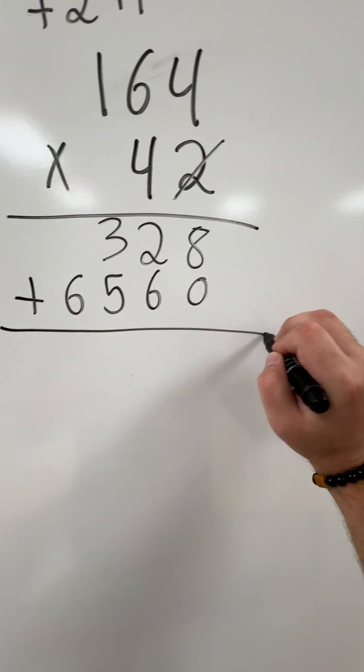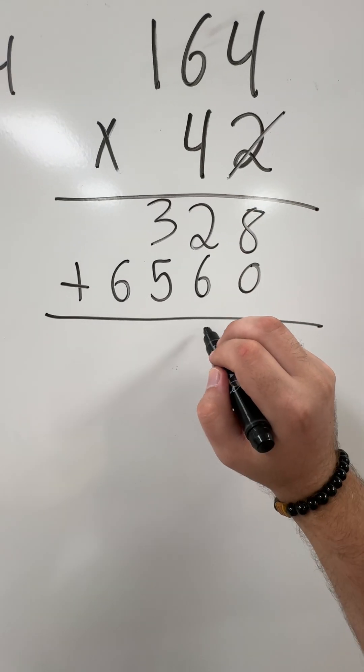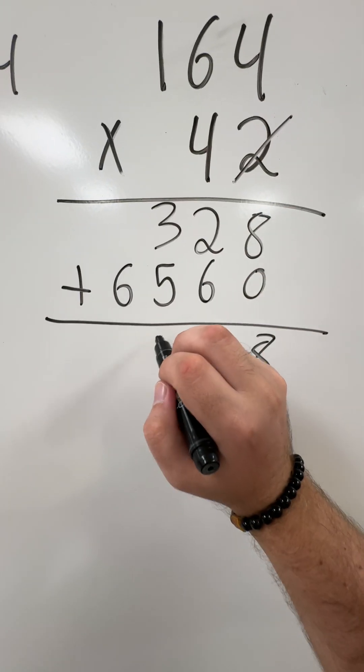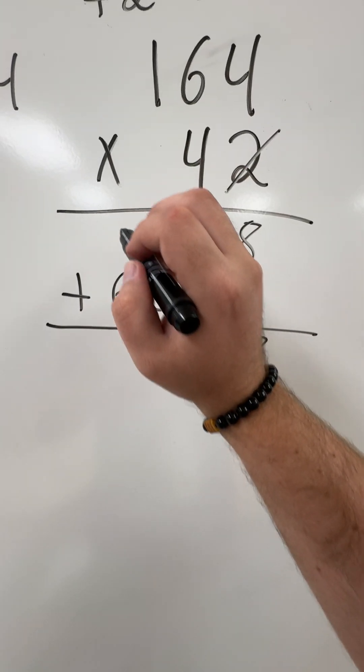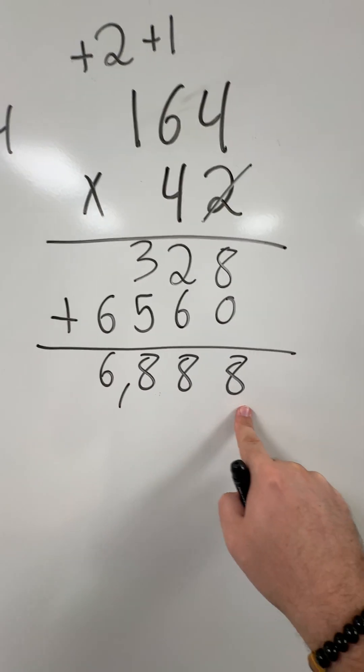Now I'm going to find the sum of them. Eight plus zero is eight. Two plus six is eight. Three plus five is eight. Zero plus six is six. The total is going to be 6,888.